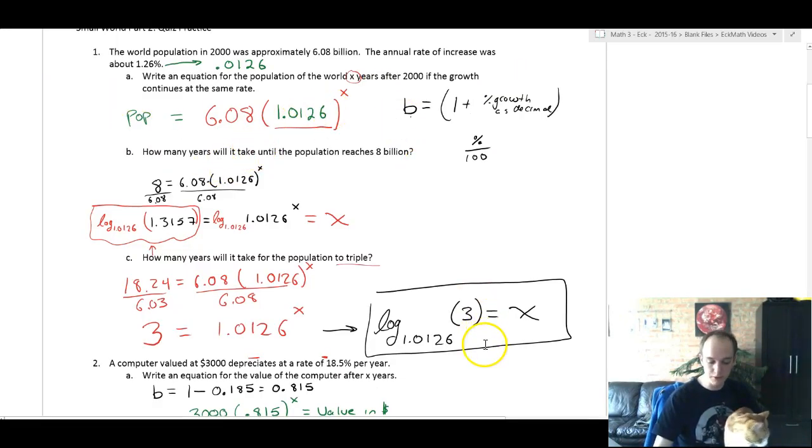Welcome back. On the word problem sheet, number one was about world population, and 1c asked how many years it would take for the population to triple. So if you watch this video, we said eventually that it would take log base 1.0126 of three years.